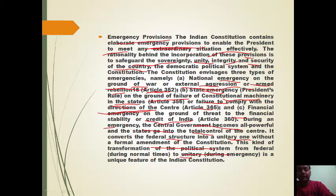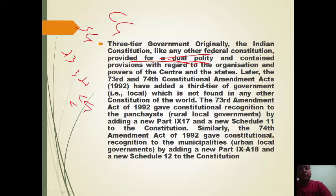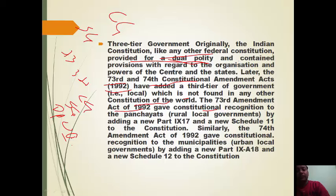Originally the Constitution provided for a dual polity — central and state governments. The 73rd and 74th Constitutional Amendment Acts of 1992 added a third tier of local government, unique among world constitutions. The 73rd amendment gave constitutional recognition to Panchayats (rural local governments) by adding Part 9 and Schedule 11, while the 74th amendment added Schedule 12 for municipalities — that is, urban local bodies.